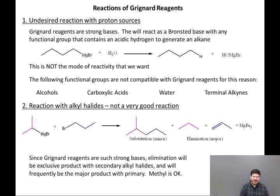Elimination will be the exclusive product with secondary alkyl halides. The one exception in which you can do this in high yield would be with a methyl halide because there are no beta-hydrogens to remove, so elimination is not a possibility. So if this is not a good reaction, what is a good reaction? Why are Grignard reagents so important?